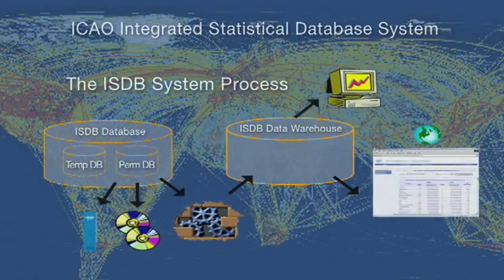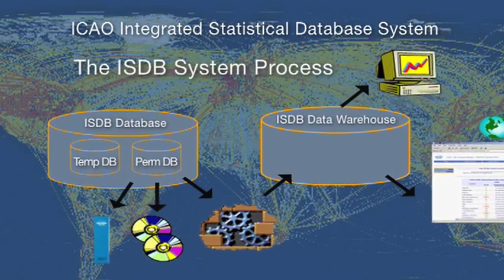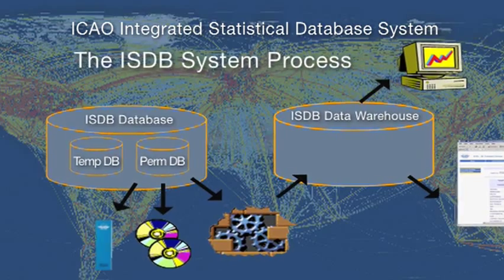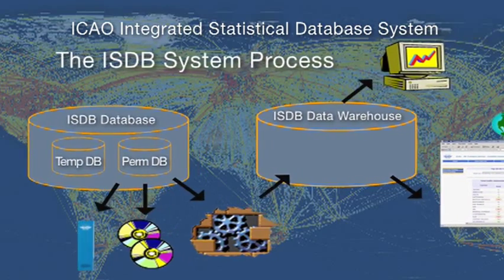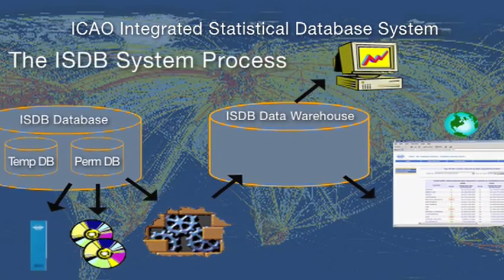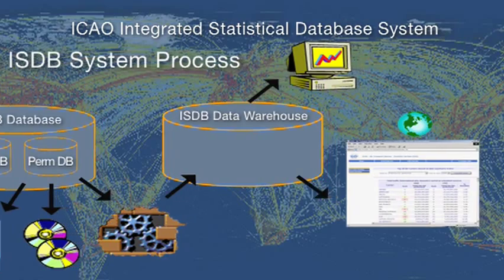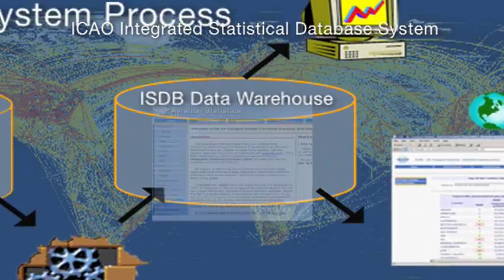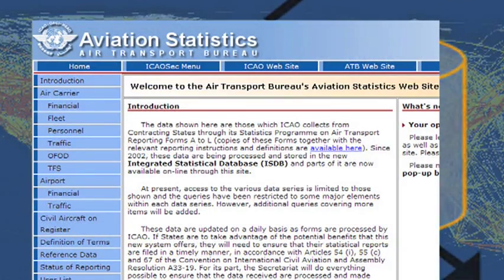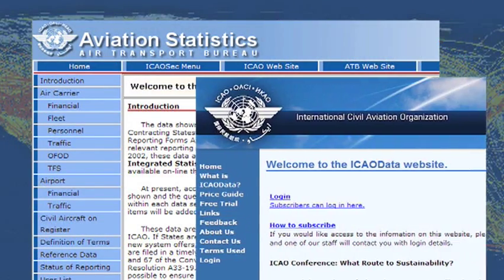The ICAO integrated statistical database system collects raw data, processes, analyzes, and disseminates reports either via ICAO's secured site or the ICAO data website.